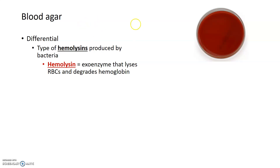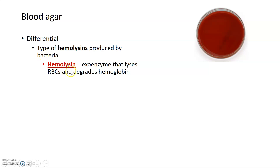A hemolysin is an exoenzyme, or secreted enzyme, that can lyse or kill red blood cells and degrade the hemoglobin inside. Blood agar is made by adding red blood cells to a normal medium like TSA or LB. Those red blood cells can be degraded by hemolysins, and the resulting degradation pattern can help you distinguish what types of hemolysins those bacteria have.